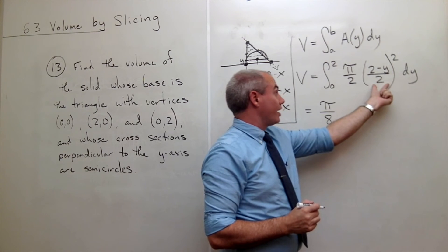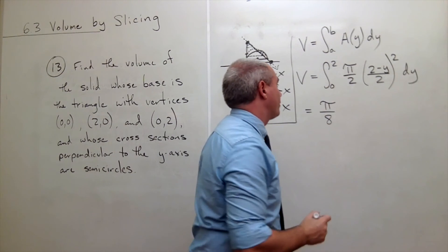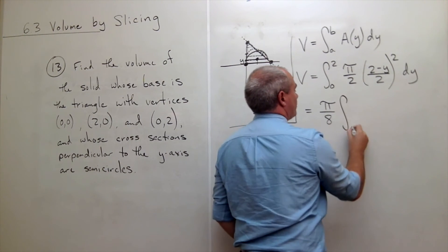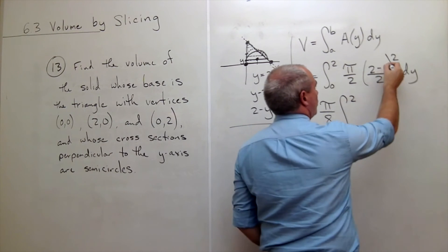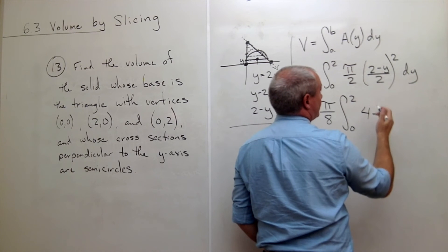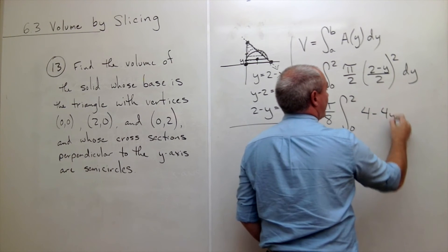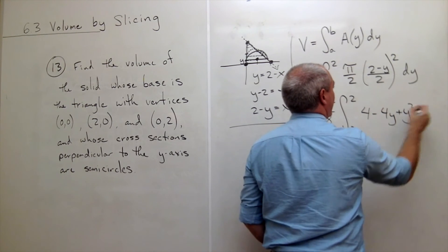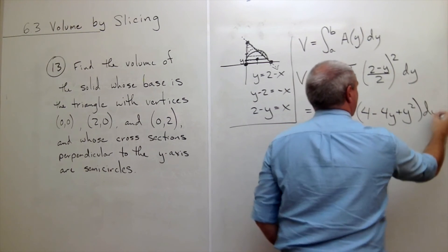Two here, four here, and then the π on top. Then I have integral from zero to two, and now I just want to square this guy, which would give me 4 minus 4y plus y² dy.